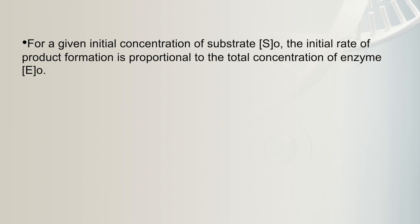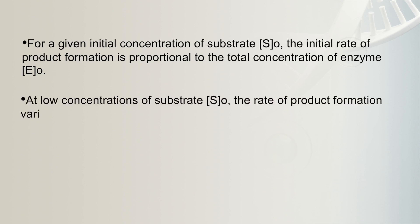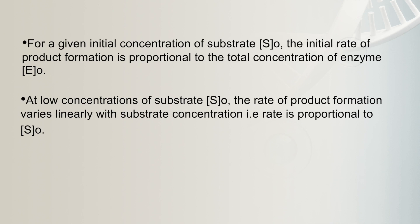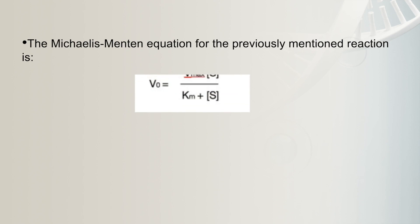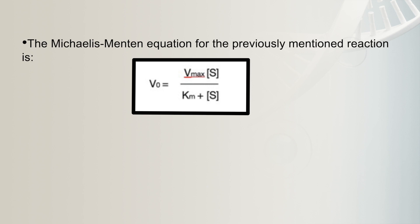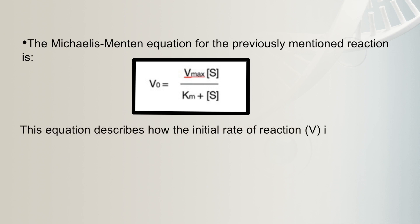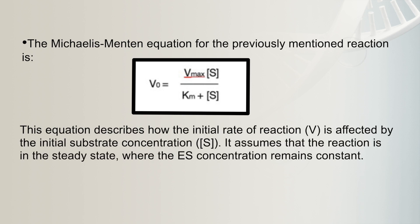To derive the Michaelis-Menten equation, certain principles are important. Number one: for a given initial concentration of substrate, the initial rate of product formation is proportional to the total concentration of enzyme. Next: at low concentration of substrate, the rate of product formation varies linearly with substrate concentration. Next: when the concentration of substrate is high, the rate of product formation becomes independent of substrate concentration, reaching a maximum value — Vmax. The Michaelis-Menten equation is expressed as V₀ = Vmax × [S] / (Km + [S]). This equation describes how the initial rate of reaction V₀ is affected by the initial substrate concentration [S], and assumes the reaction is in steady state.